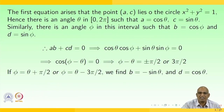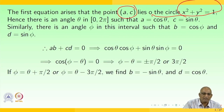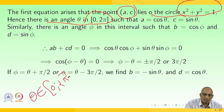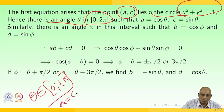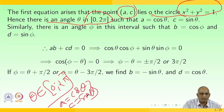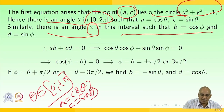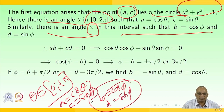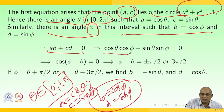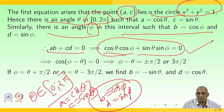The first equation shows that the point (a, c) lies on the circle x² + y² = 1. Hence there is an angle θ in [0, 2π) such that a = cos θ and c = sin θ. Similarly, there is an angle φ in the interval such that b = cos φ and d = sin φ. Therefore we have ab + cd = 0, that is cos θ cos φ + sin θ sin φ = 0, which implies cos(φ − θ) = 0.